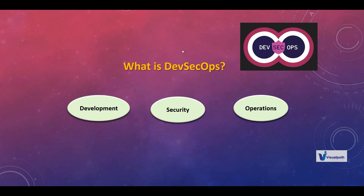As a DevSecOps engineer, I have to find a tool that does security checks at the network, infra, software, or application level, and integrate it into my automation. Nothing should be done manually in DevOps or DevSecOps — everything should be automated. That is what we are going to learn in this training program, using different tools like Ansible, Terraform, shell scripting, Jenkins and other CICD pipelines, and Git.